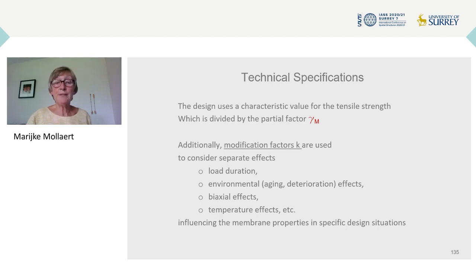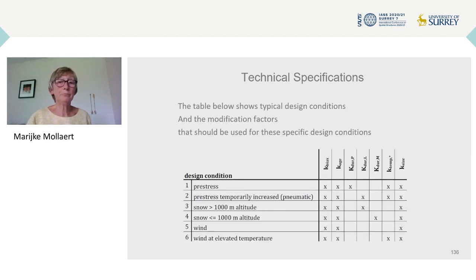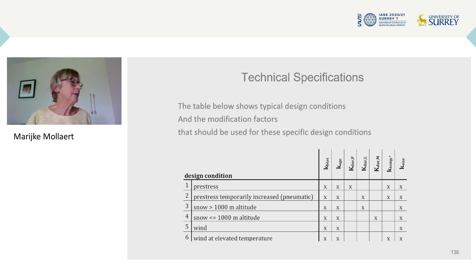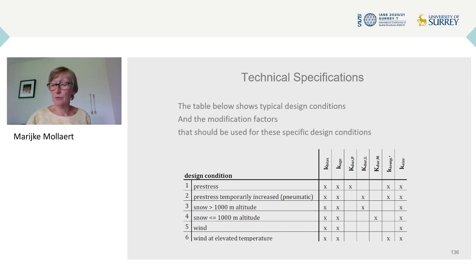The table shows typical design conditions and the modification factors that should be used for these specific design conditions. For instance, in case of pre-stress (line 1), the modification factors for biaxial effects, aging, permanent duration of load, temperature effects and size are used. While for wind (line 5), only the modification factors for biaxial effects, aging and size are used.